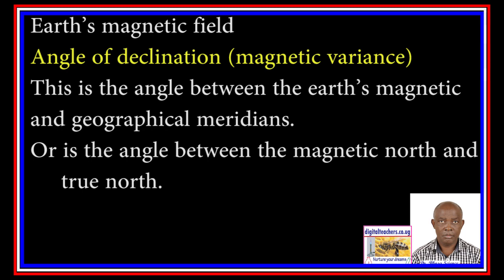The angle of declination is the angle between the magnetic north and the true north. The magnet does not point in the true north; it points in the magnetic north. The angle between the true north and the magnetic north is called the angle of declination or magnetic variance.